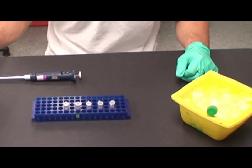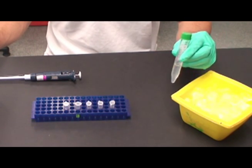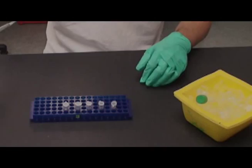Serial dilutions are completed by removing a small portion of the stock solution and diluting it through a series of microfuge tubes.